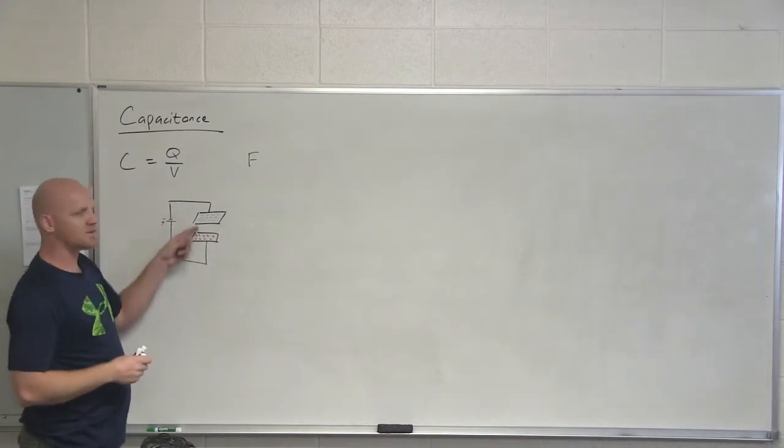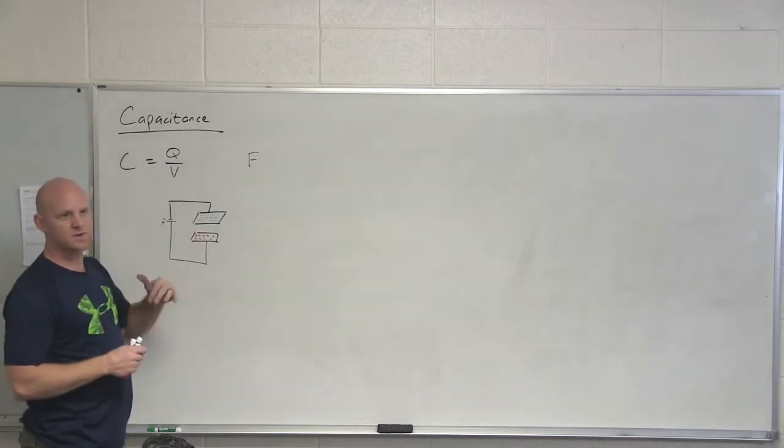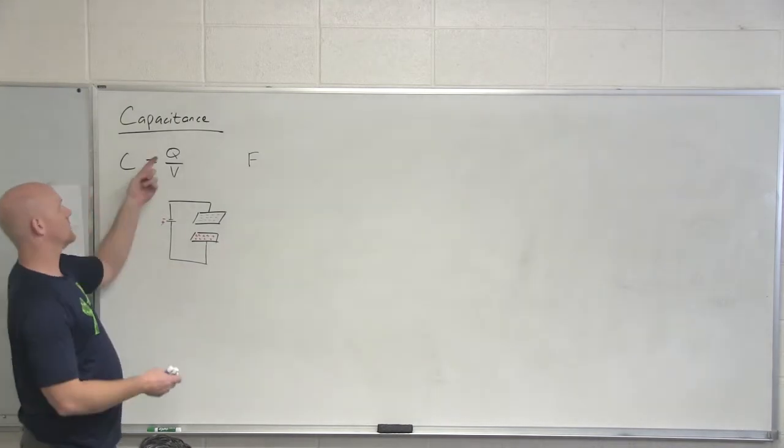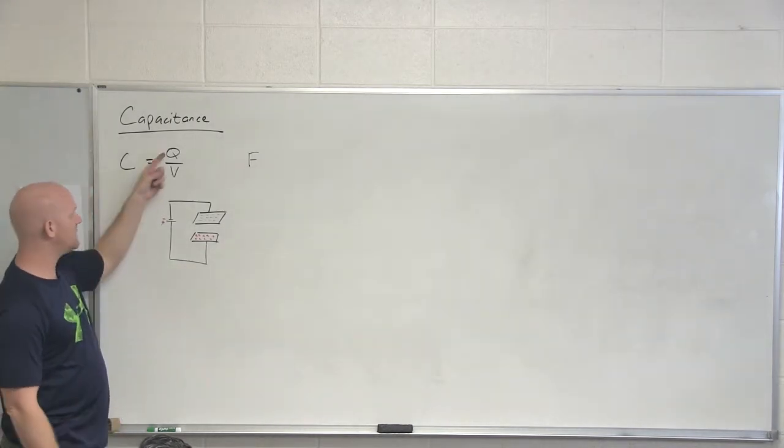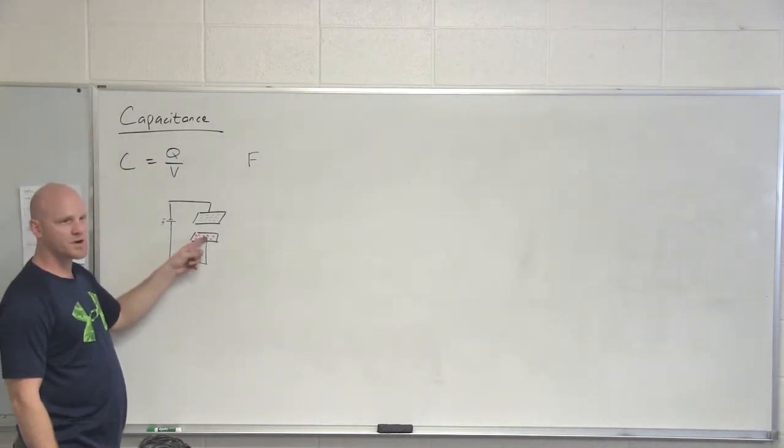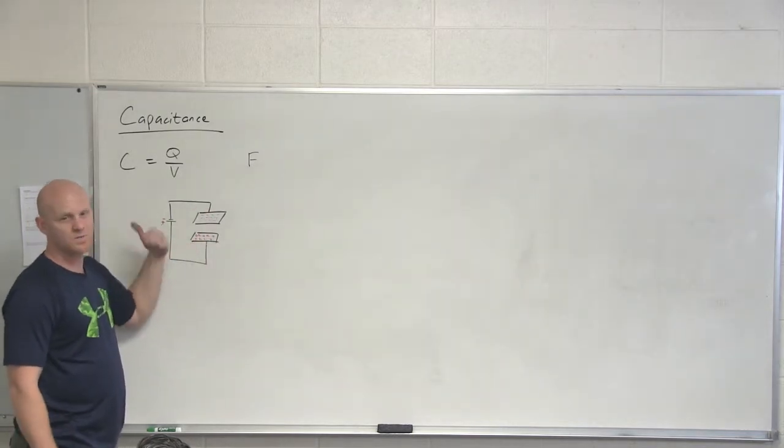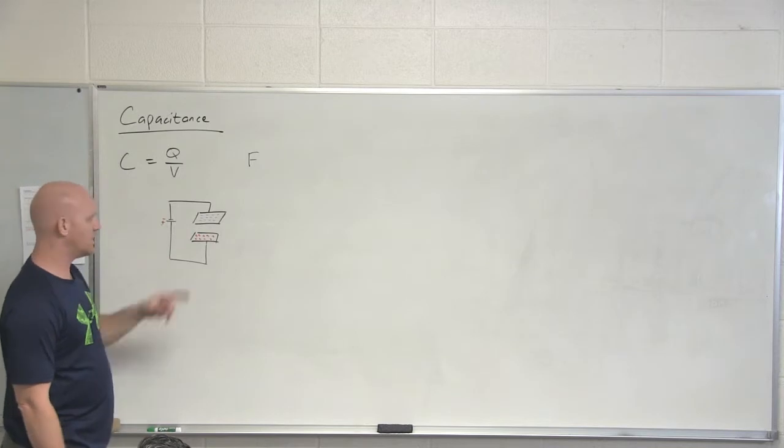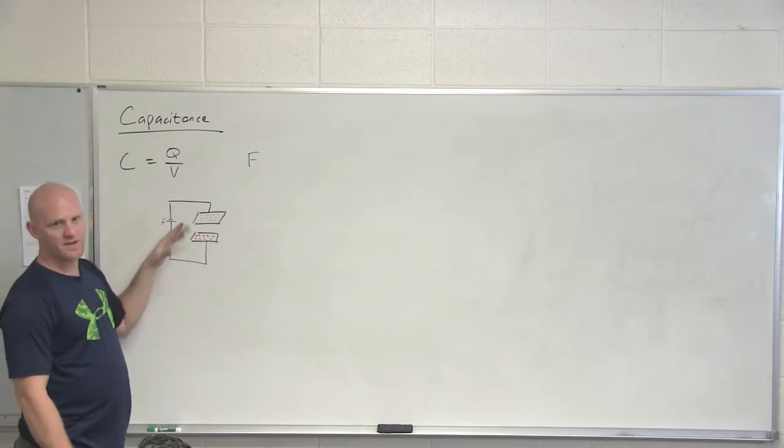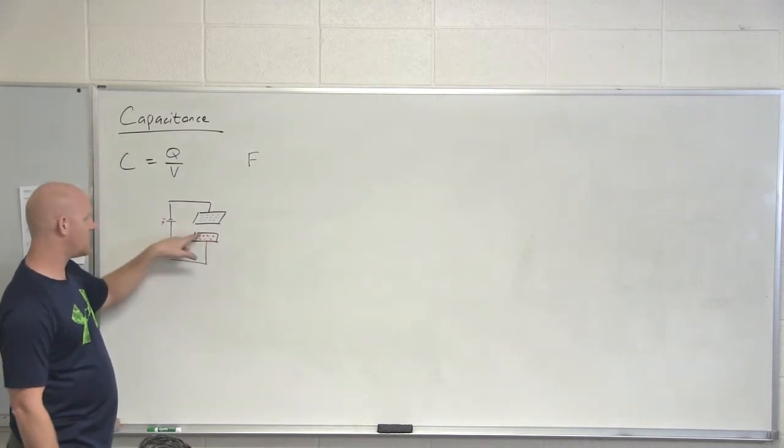And if the positive charges leave, what charge would be left on this plate? Negative. And so as the charges build up, it gets harder and harder to build up greater charge and it slows down and eventually reaches a maximum. And that maximum is Q. So the Q here represents either the total positive charge on this plate or the total negative on this plate. They have the same charge, just one's positive, one's negative.